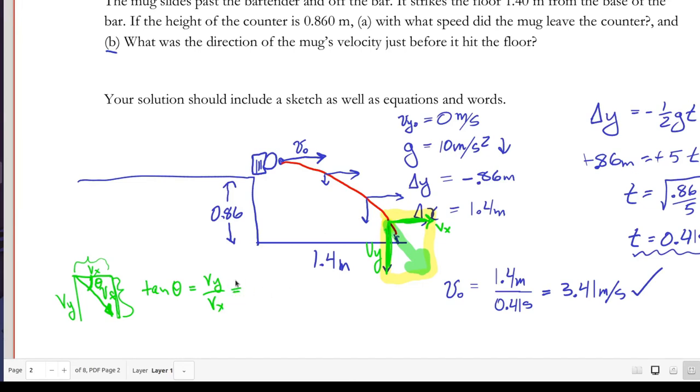Since we know that this is falling for 0.41 seconds and it gains 10 meters per second per second, I know that after 0.41 seconds it's traveling 4.1 meters per second downward.